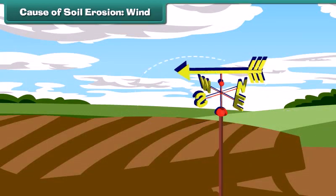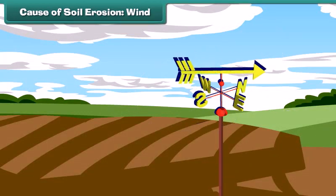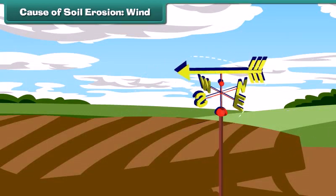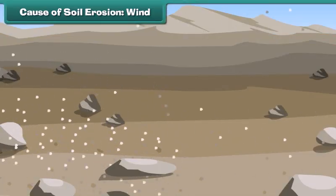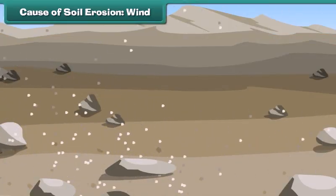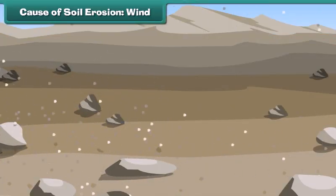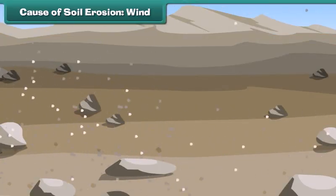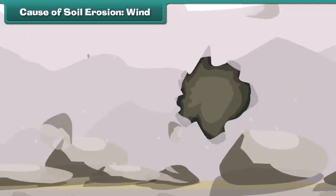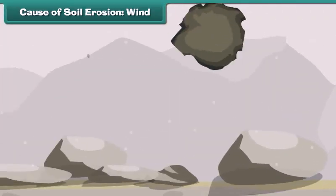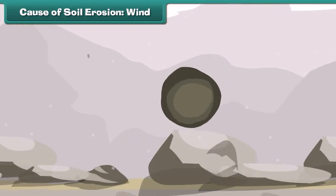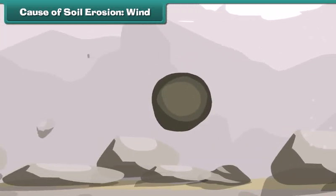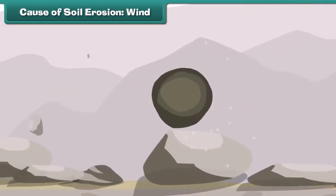The other agent responsible for soil erosion is wind. Wind picks up finer soil particles and takes them to other locations. During storms, heavy wind takes away bigger soil particles to distant places, and that causes soil erosion.